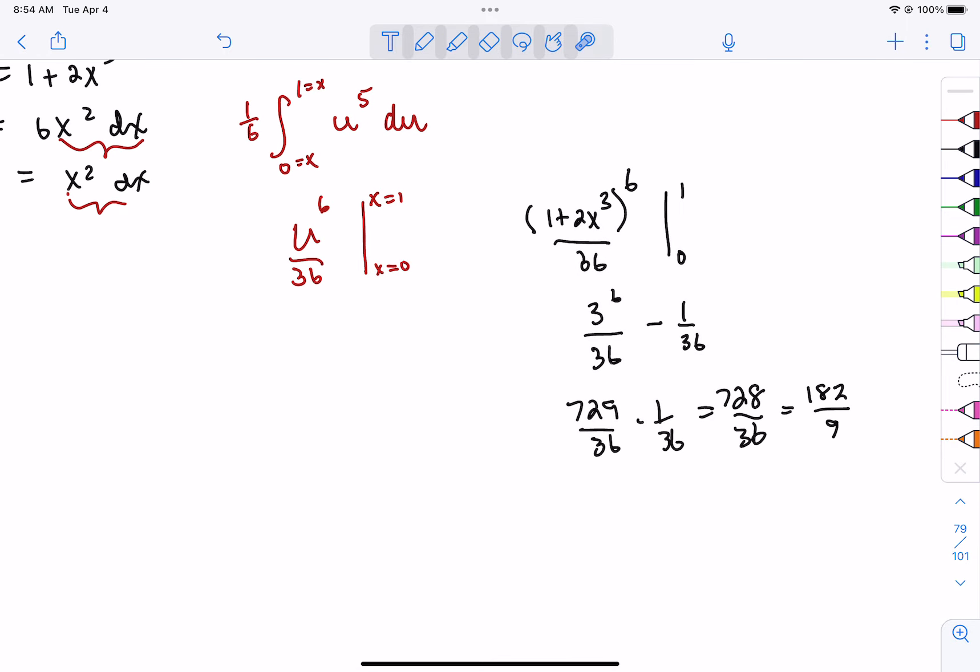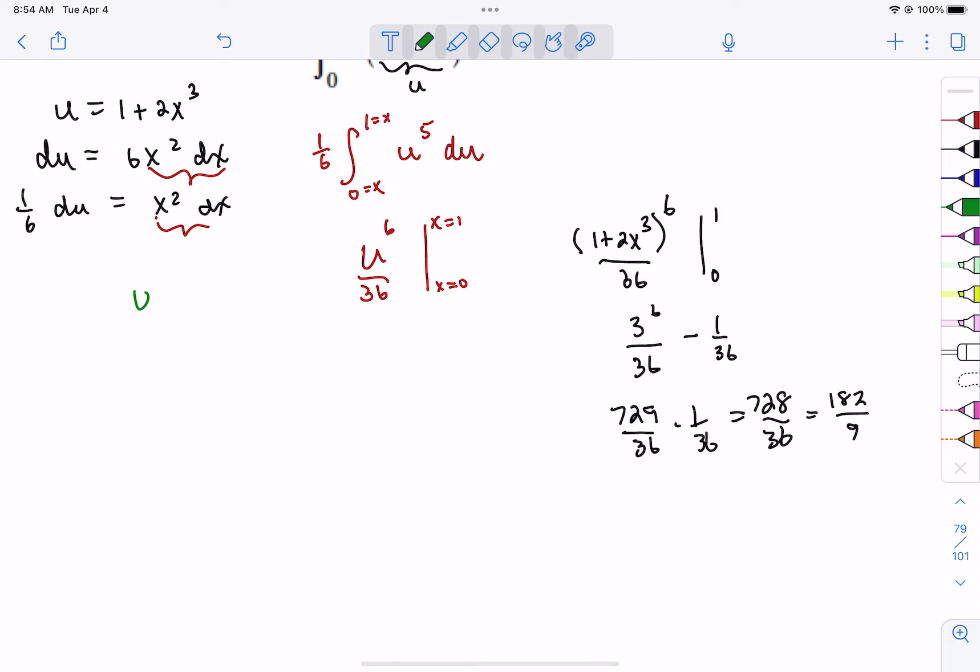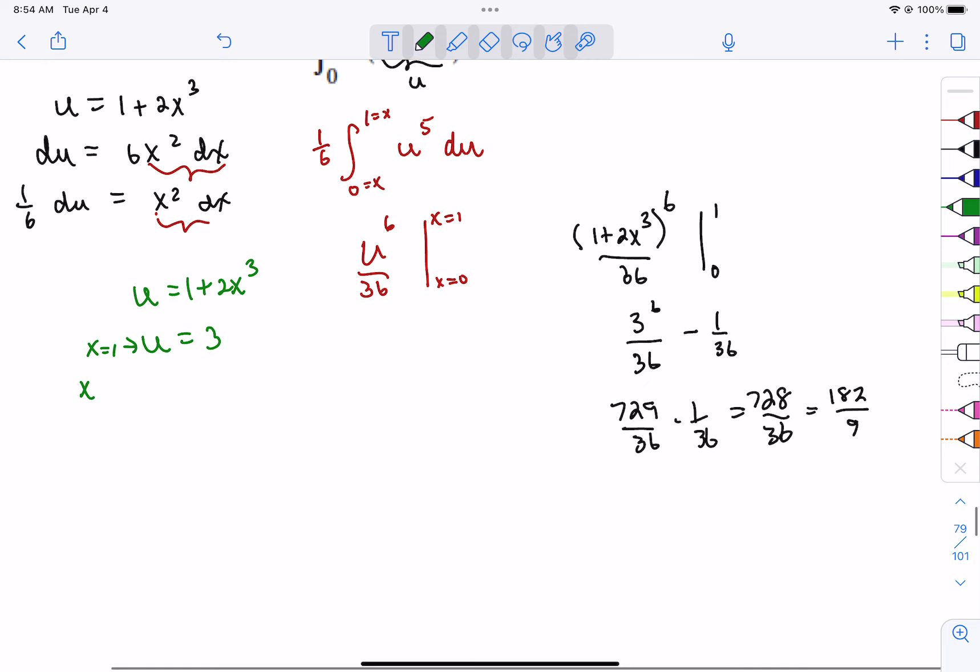Now, I'm going to go back to this step right here and tell you an alternative. Don't we know that u is 1 plus 2x³? So if x is 1, then u would be 1 plus 2 or 3, right? If x is 0, u is equal to 1. So if we change our boundaries to be u's, it takes care of it for us. And look, that became a 3, that became a 1.